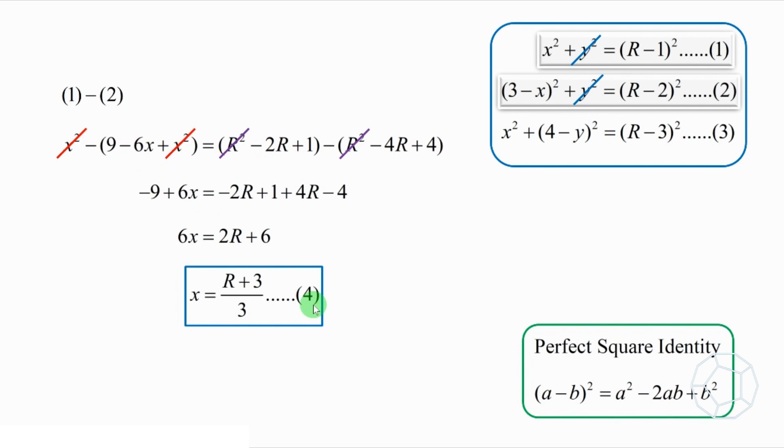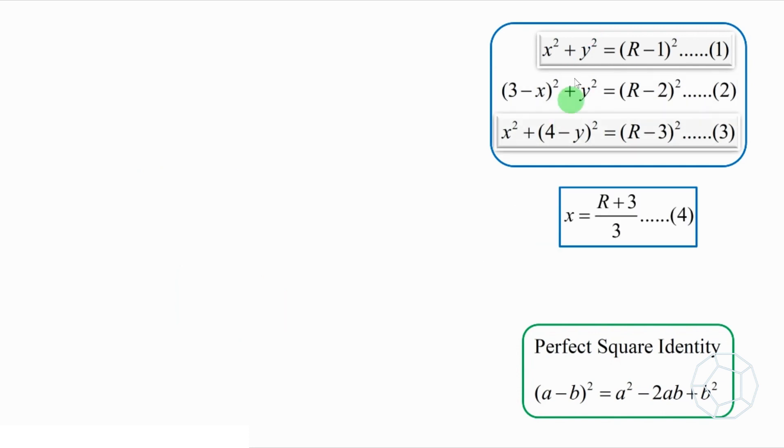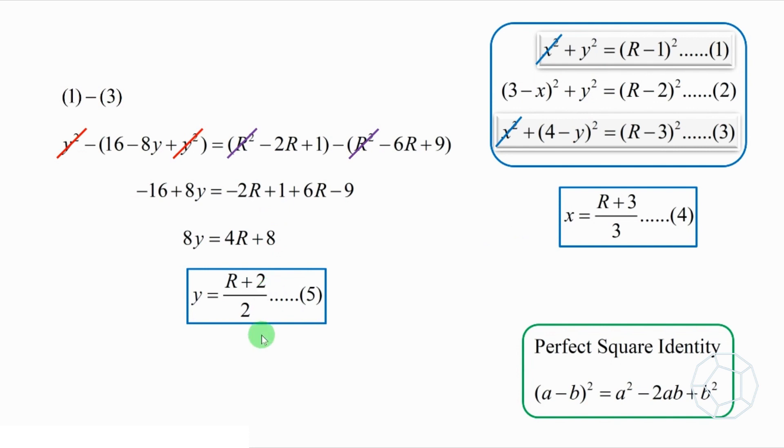Let's do the same for another unknown. Subtract equation 1 by equation 3 to get rid of X. Expand and simplify. The steps are almost the same as the previous one. We have Y is equal to R plus 2 over 2. We create equation 5.